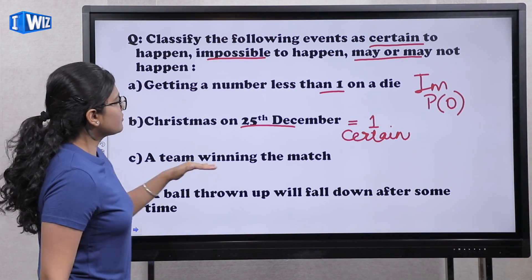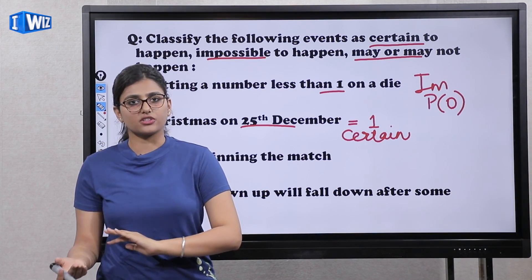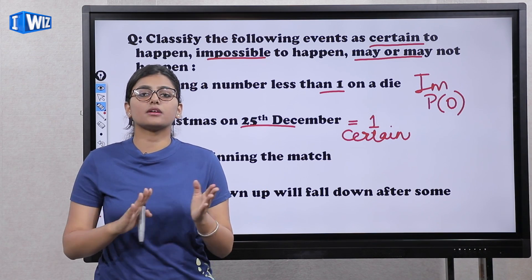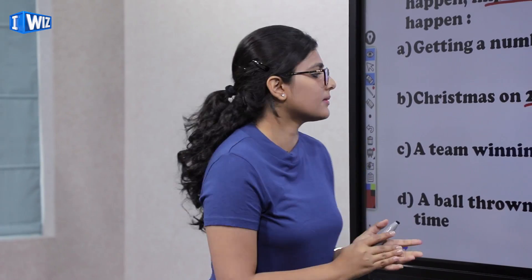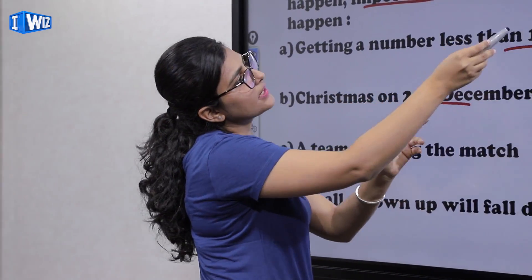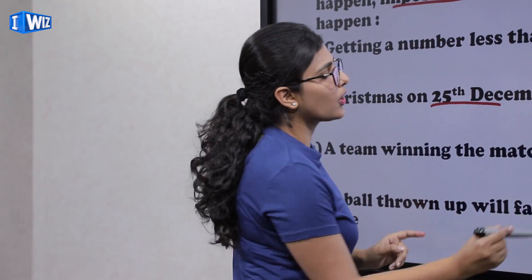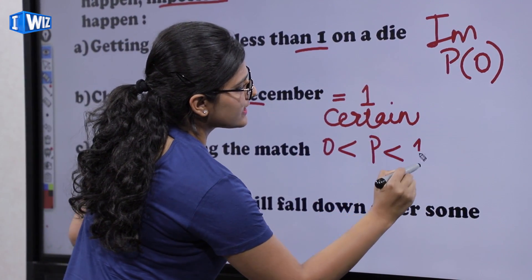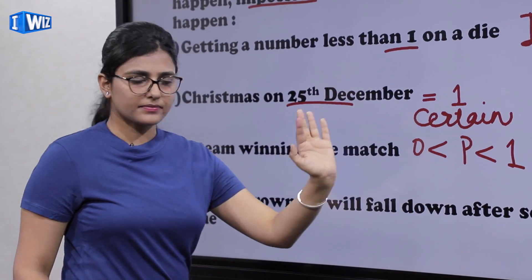The next is a team winning a match. A team may or may not win a match. When all factors are constant and there is no bias, a team can win or not. So this may or may not happen, and the probability is between 0 and 1.